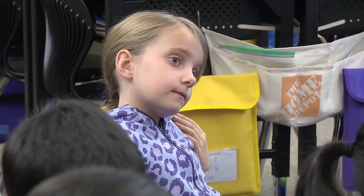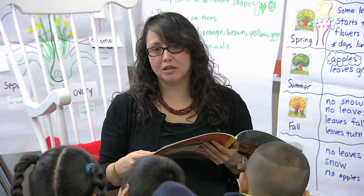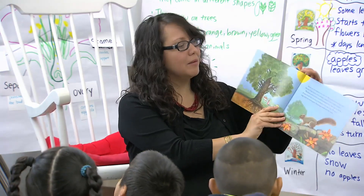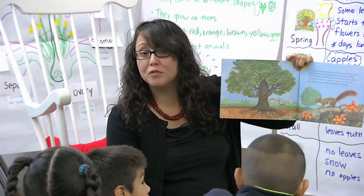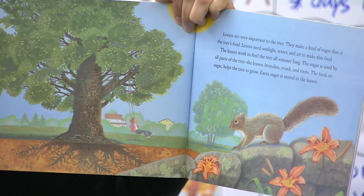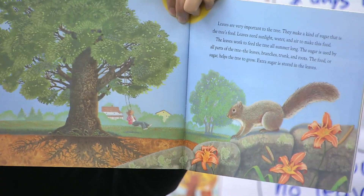It's not a lockstep drill kind of instruction — there's a lot more freedom and we really do care about responsive teaching. We want students to share ideas and questions that they have. Leaves are very important to the tree. They make a kind of sugar that is the tree's food. Leaves need sunlight, water, and air to make this food.